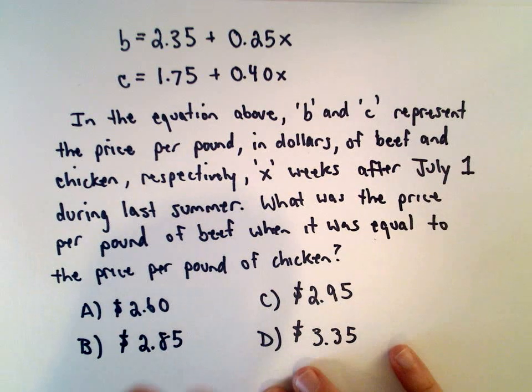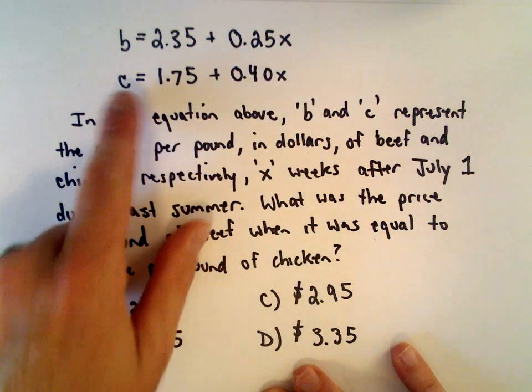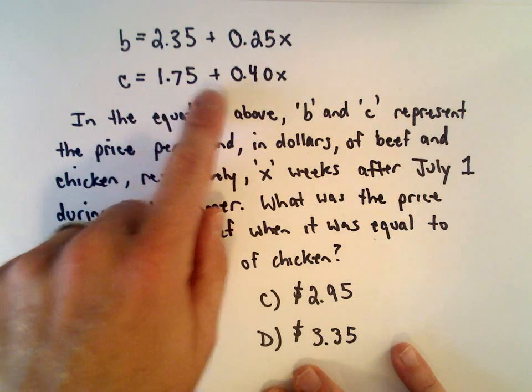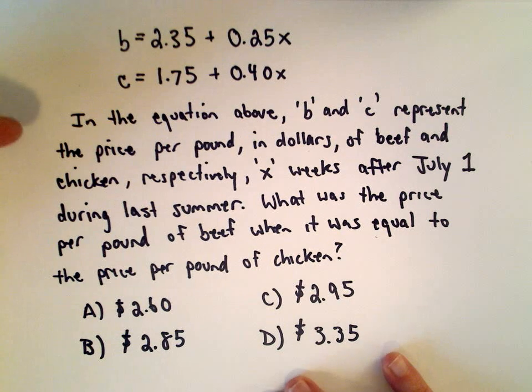So in this question, we're given two equations. We have B equals 2.35 plus 0.25x, C equals 1.75 plus 0.40x. And it says in the equation above...